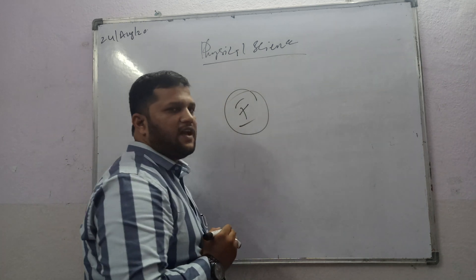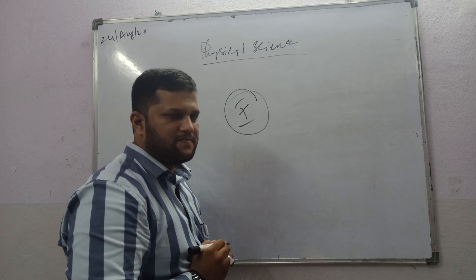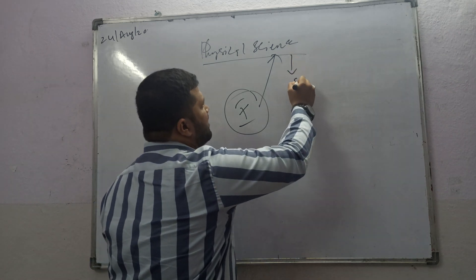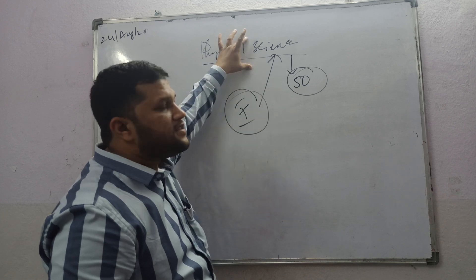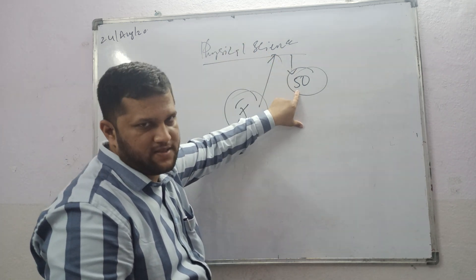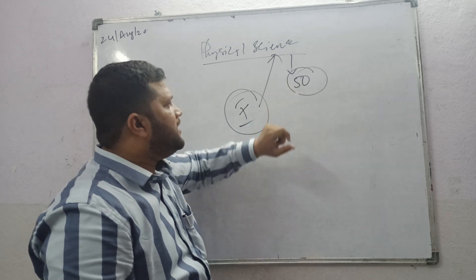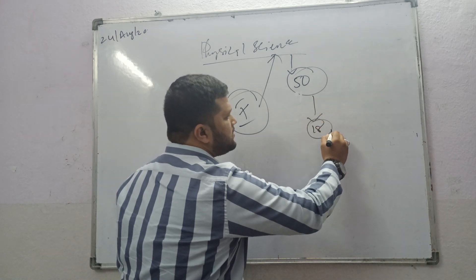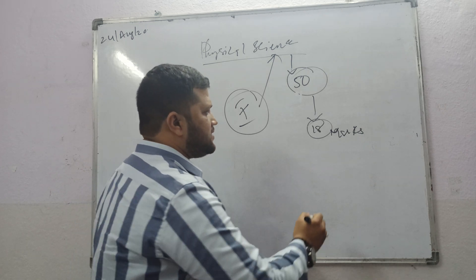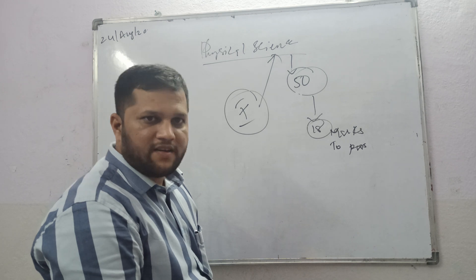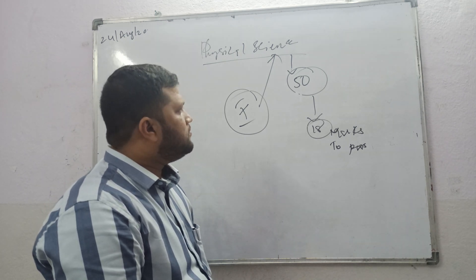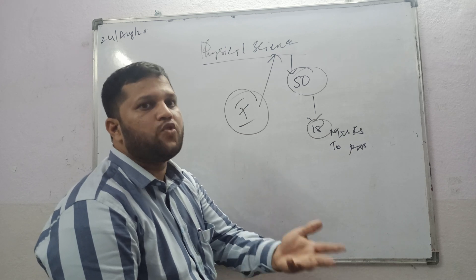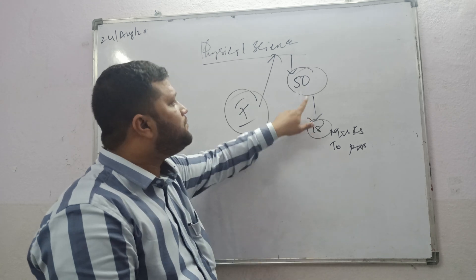Here, in tenth class, physical science. The board paper is 50 marks. Before starting the first unit, I am going to explain about the board question paper. Our physics subject contains 50 marks.